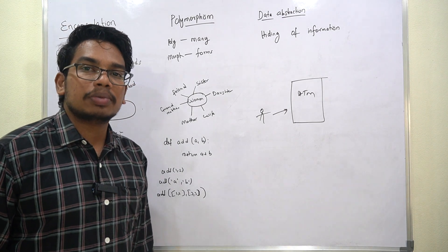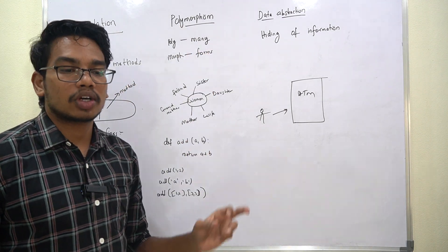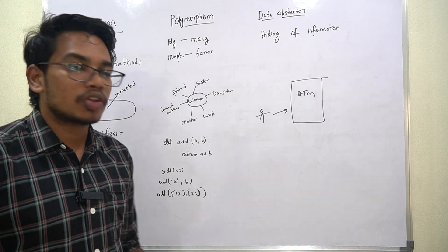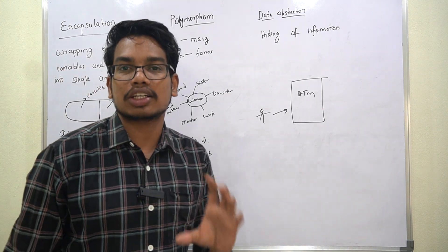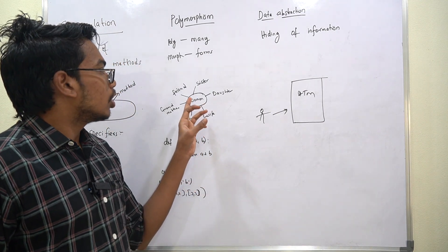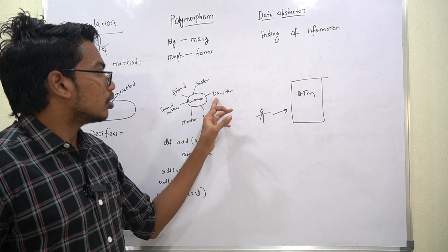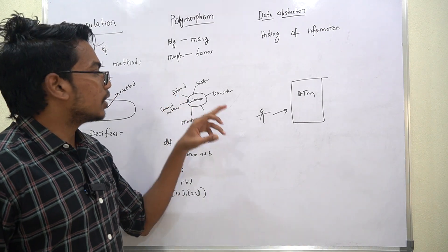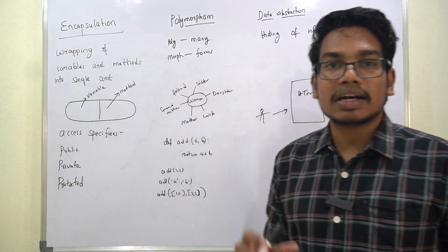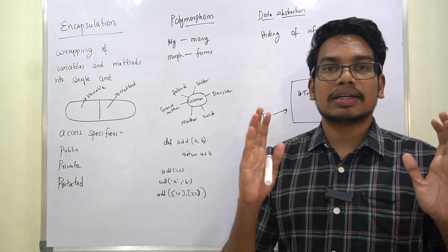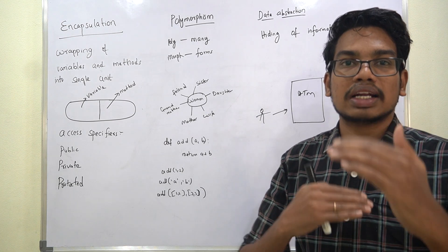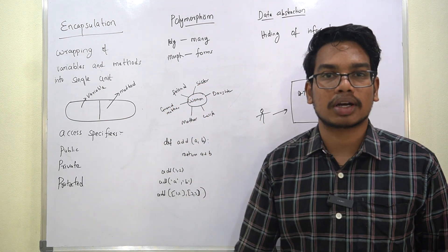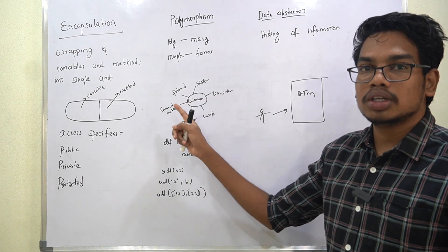This is Polymorphism. Polymorphism means many forms. For example, consider a woman — she can be a Sister, Actress, Daughter, Wife, Mother, Grandmother, or Friend. Only one woman but with different roles, like different, multiple forms.